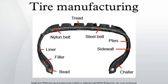Inner liner: The inner liner is an extruded halobutyl rubber sheet compounded with additives that result in low air permeability. The inner liner assures that the tire will hold high-pressure air inside, without the air gradually diffusing through the rubber structure.